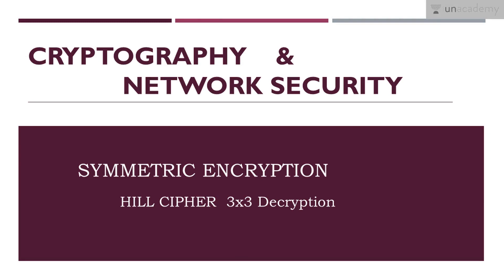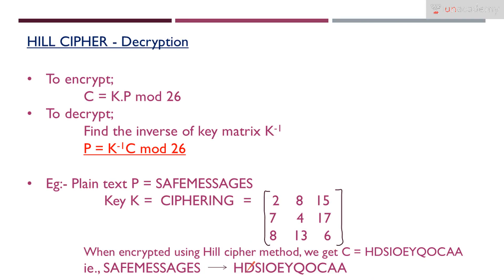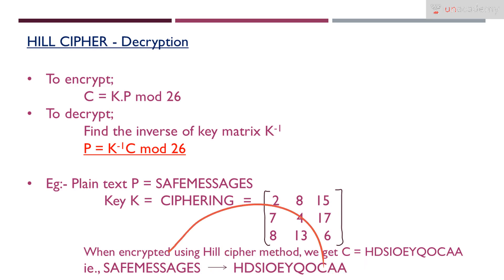In the previous lesson we learnt how to encrypt using Hill Cipher in the case of 3x3 matrices. In this lesson we are going to see how to decrypt the same. In the previous lesson we encrypted the plain text 'SAFE MESSAGES' using the key, ciphering it into the cipher text HDSIOEYQOCAA. Now we are going to decrypt this cipher text back into the original message using the same key.